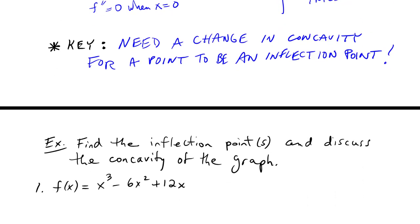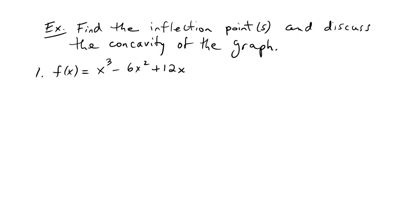So let's see how we do that in an example here. Find the inflection points and discuss the concavity of the graph. So basically find any inflection points and then tell where it's concave up and concave down.